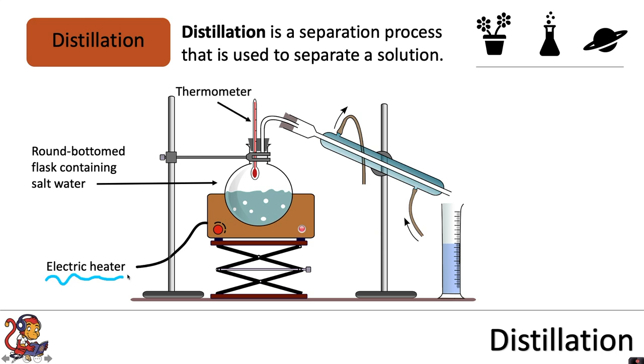We would monitor the temperature using a thermometer and we would use this to observe the boiling point of the substance we wanted to collect. We would heat the sample until it boils and the liquid water would turn into water vapour.